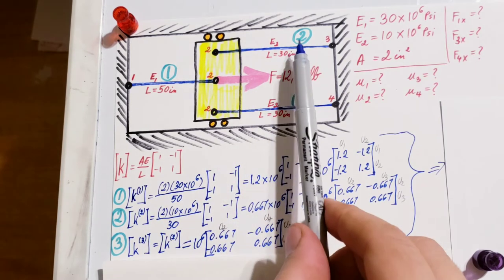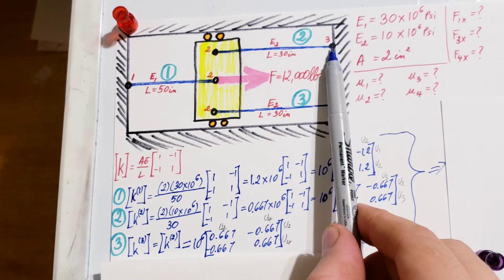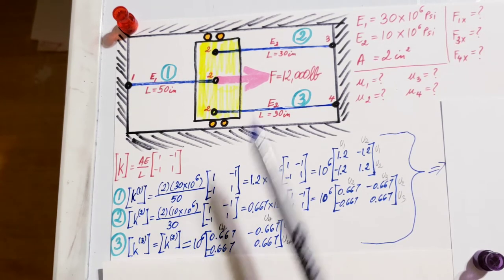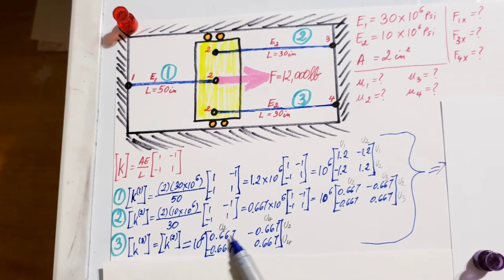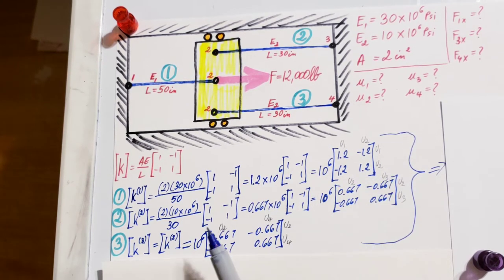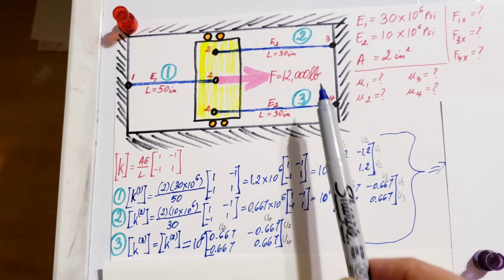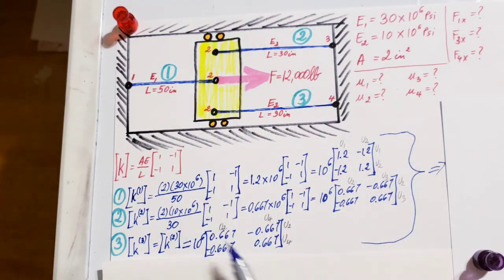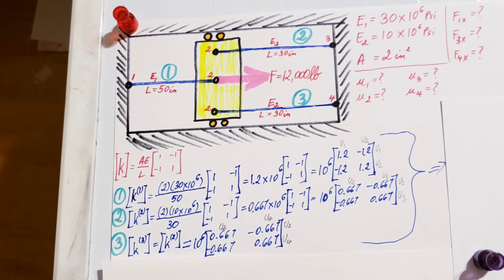Element 2 is bordered by points 2 and 3. Even though elements 2 and 3 have the same values, the information doesn't belong to the same nodes. This is u2, u3, and here we have u2, u4. Element 3 is bordered by 2 and 4. This will be important when doing our global stiffness matrix.